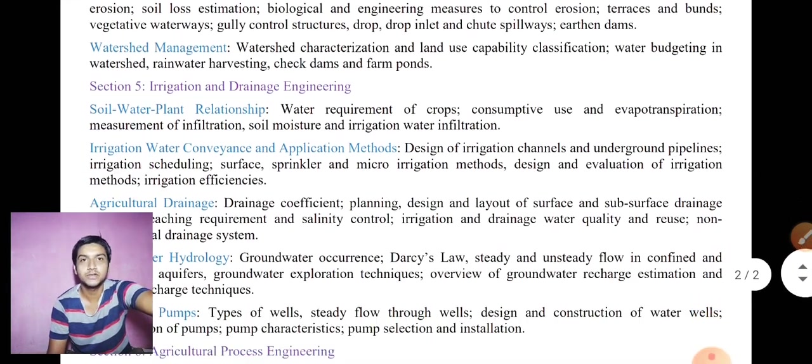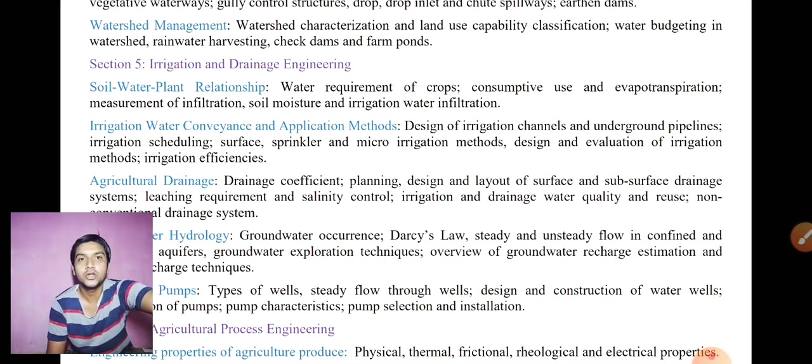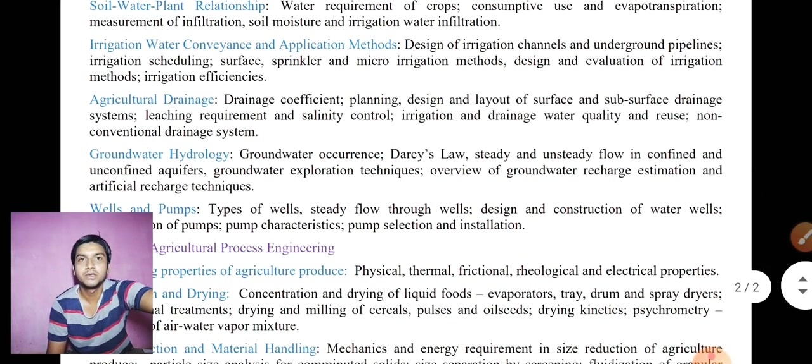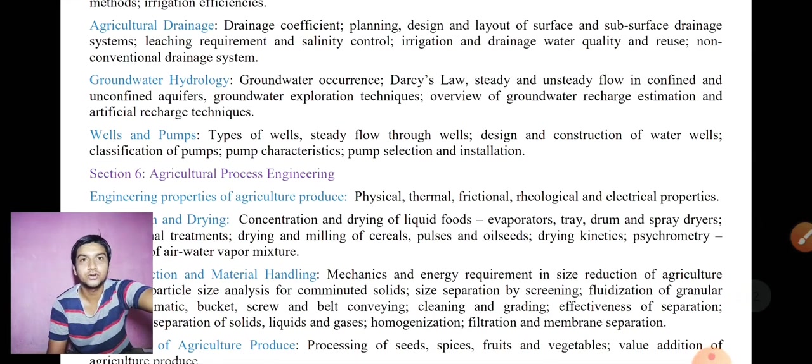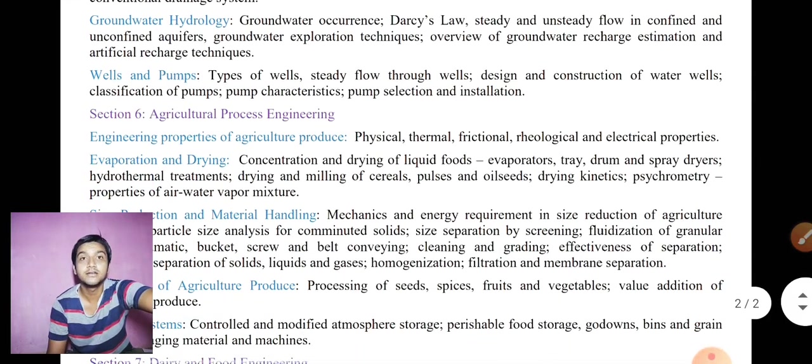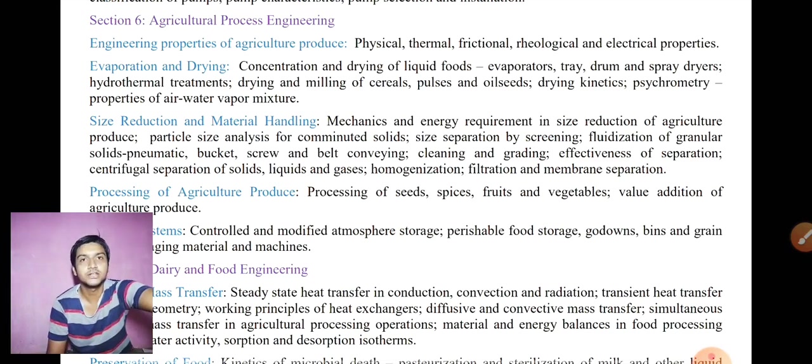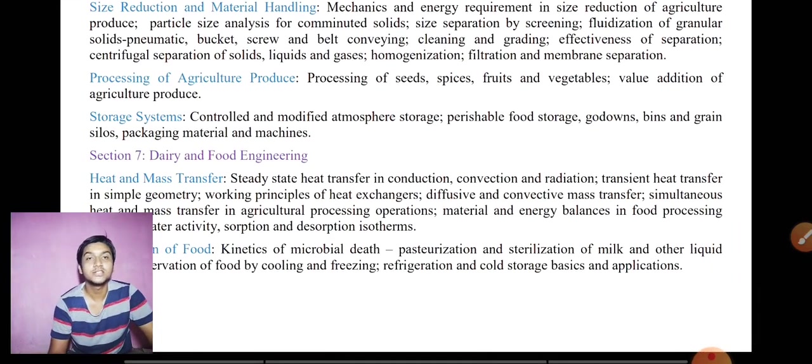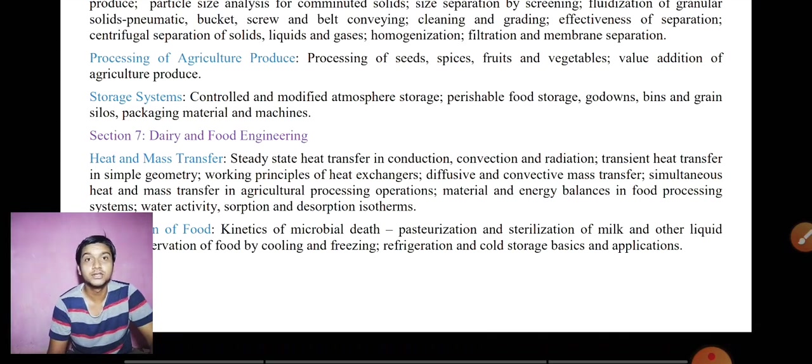The fifth section is irrigation and drainage engineering, which includes soil water plant relationship, irrigation water conveyance and application methods, agricultural drainage, watershed, groundwater hydrology, wells and pumps. The sixth section is agricultural processing engineering, which includes engineering properties of agricultural produce, size reduction, material processing, and storage systems.